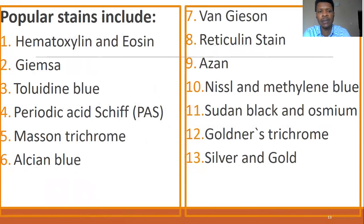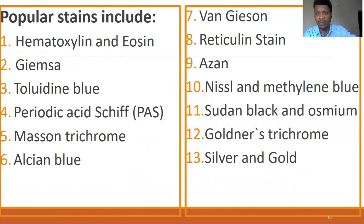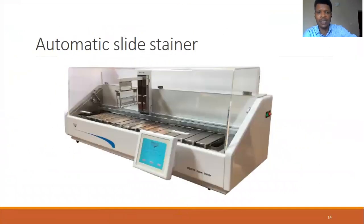Popular stains include hematoxylin and eosin, normally known as H&E. We also have Giemsa, toluidine blue, periodic acid-Schiff, Masson's trichrome, Alcian blue, van Gieson stains, reticulin stain, azan, Nissl and methylene blue stains, Sudan black and osmium, Goldner's trichrome, and silver and gold stains. There are several other types of stains, but I've just mentioned a few here. This is an automatic slide stainer.